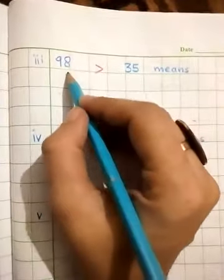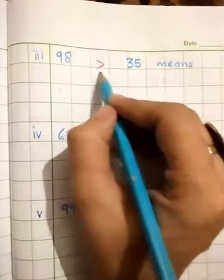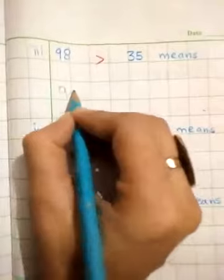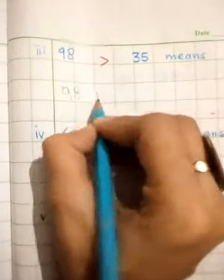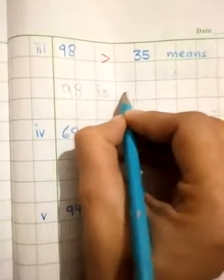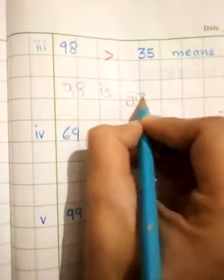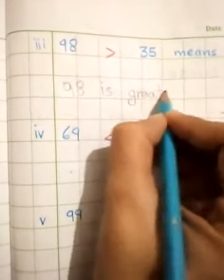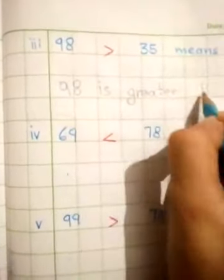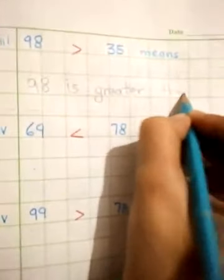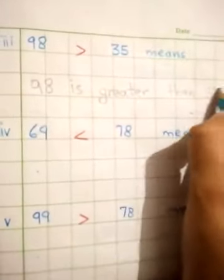Question No. 3 is, 98 is greater than 35. 98 is greater than 35.